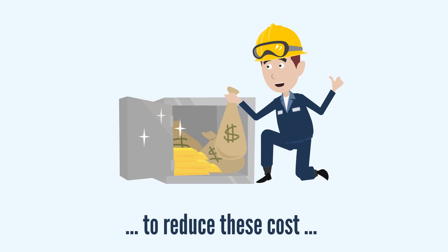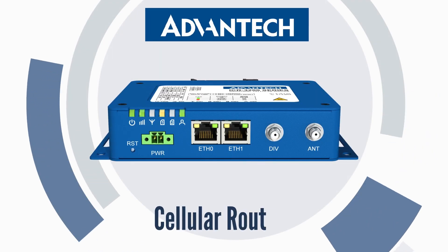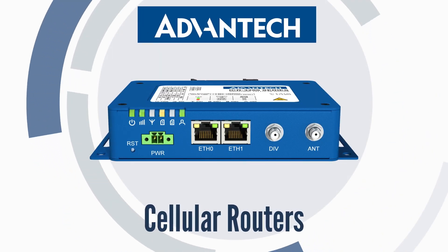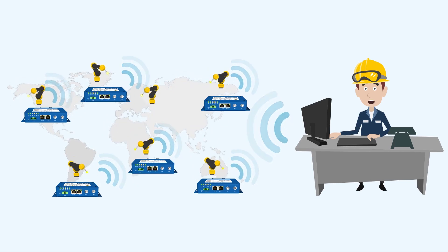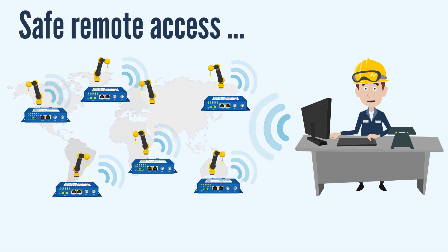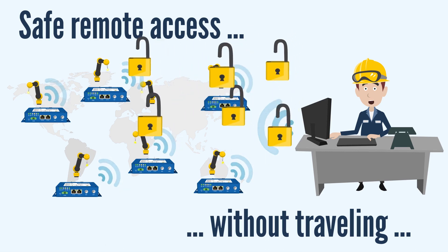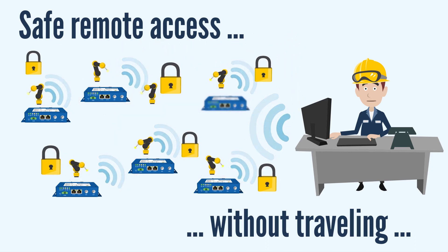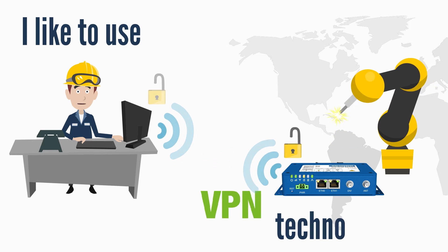To reduce these costs I suggested to use Advantech cellular routers for remote management. It allows me to access robots in remote destinations without a necessity to travel there. To make communication with remote robots secure, I like to use VPN technology.